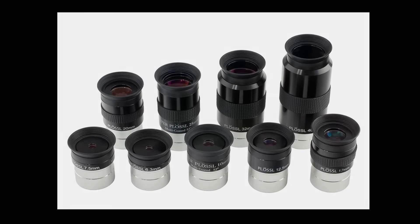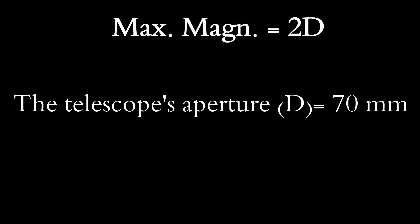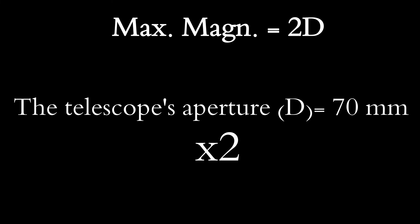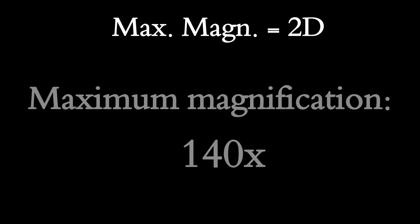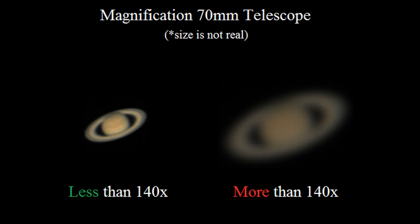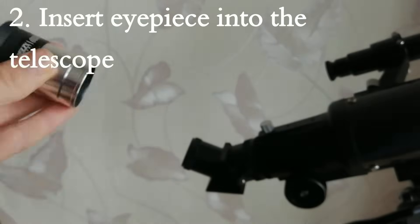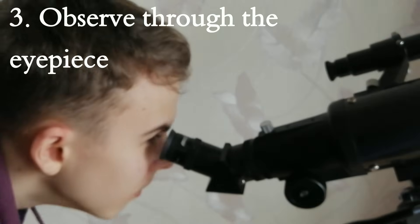You can change the magnification by switching eyepieces with different focal lengths. An important point: the maximum magnification for your telescope is found by multiplying the aperture in millimeters by 2. For example, if your telescope has a 70 mm aperture, the maximum magnification is 140 times. Above that, the image through the telescope will be of terrible quality. To use an eyepiece: take the eyepiece, insert it into the telescope, and observe through it. Bingo!